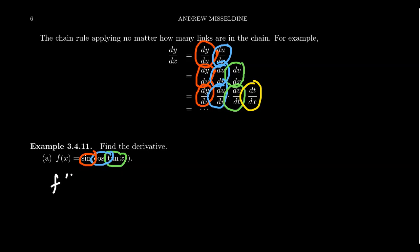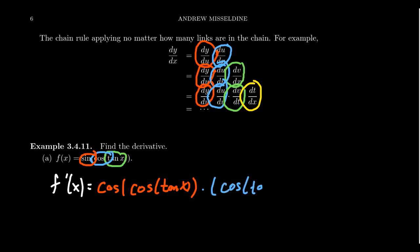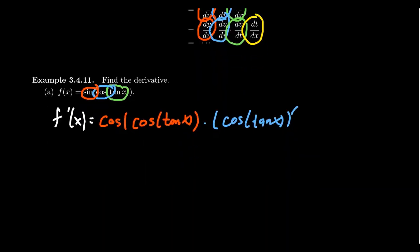The derivative of f with respect to x: we take the derivative of sine, which gives a cosine function. We then put its inner function inside, which is cosine of tangent of x. Then we multiply by its inner derivative — that is, we take the derivative of cosine of tangent of x.